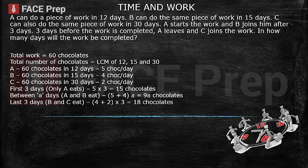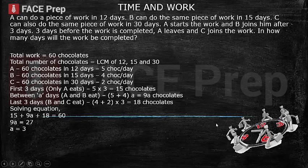In the last 3 days, A leaves and C joins the work, meaning B and C are working together. B eats 4 chocolates in a day and C eats 2 chocolates in a day, so together they eat 6 chocolates in a day. For 3 days they will eat 6 times 3, that is 18 chocolates. An equation is formed: 15 plus 9x plus 18 equals 60, where 15 is chocolates eaten by A in the first 3 days, 9x is chocolates eaten by A and B together in x days, and 18 is chocolates eaten by B and C in the last 3 days, equalling the total of 60 chocolates.